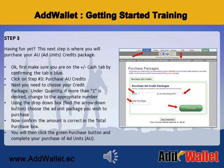Step 3. Having fun yet? This next step is where you will purchase your ad units credit package. First, make sure you are on the plus minus cash tab by confirming the tab is blue. Click on Step 3: Purchase AU Credits. Next, you need to choose your credit package. Under quantity, if more than one is desired, change to the appropriate number. Now, using the drop-down box, find the arrow down button and choose the ad unit package you wish to purchase. Confirm the amount is correct in the total purchase box. You will then click the green purchase button and complete your purchase of ad units.